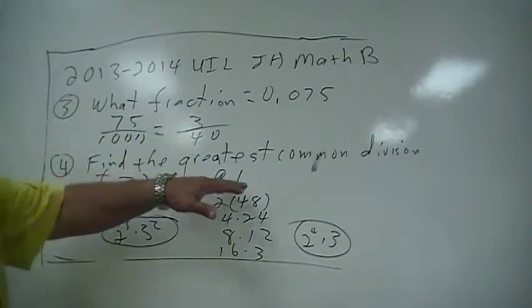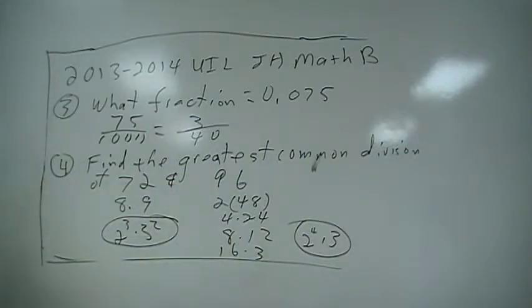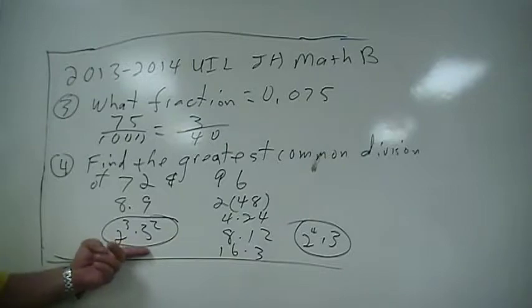The greatest common divisor of these—write them in their prime factorization. 72 is 8 times 9, which is 2 to the 3rd times 3 to the 3rd.